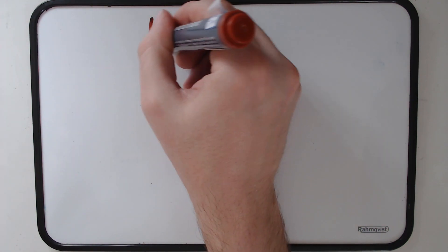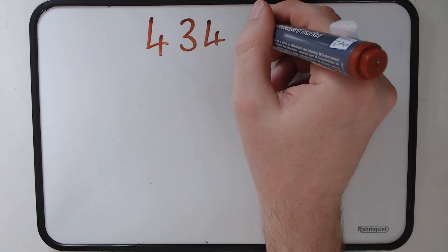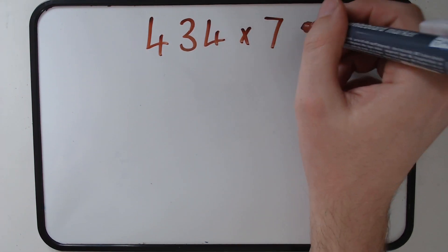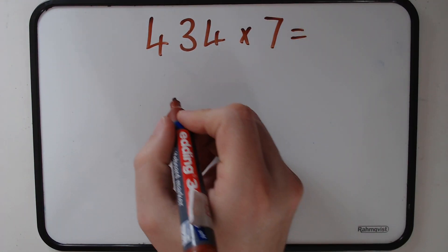For our next question, we're going to look at a three-digit number times by a single-digit number, so in this case 434 times by 7. Lay it out exactly the same way.